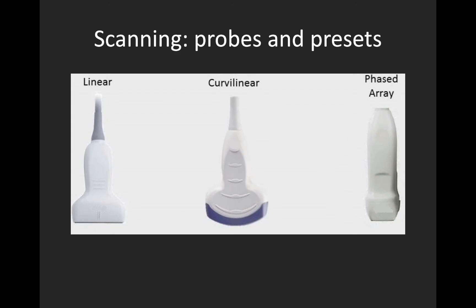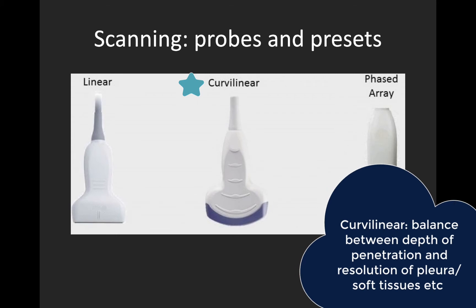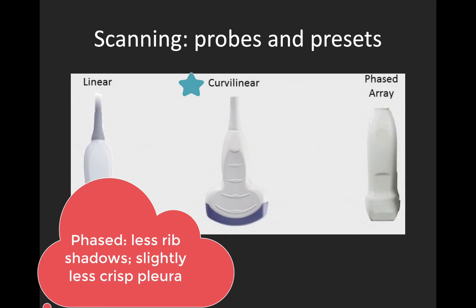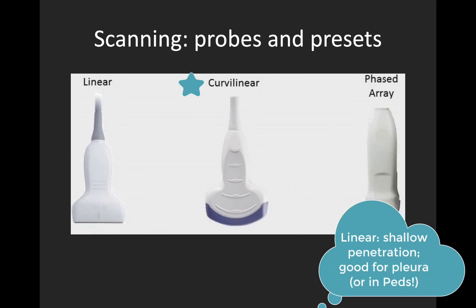At UBC, we prefer to use the curvilinear probe for most of our lung scanning, as this provides a nice balance between depth of penetration and resolution of the pleura and soft tissues. You can also scan with a phased array probe — its advantage is fewer rib shadows, though you get slightly less crisp resolution of the pleura. The linear probe typically doesn't provide enough depth of penetration for deeper structures, but can be used if the only object of interest is the pleura, for example if you're only interested in lung sliding for pneumothorax.